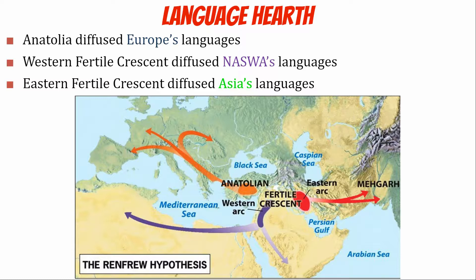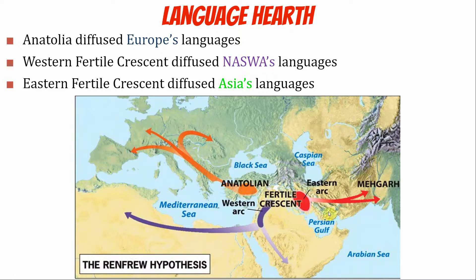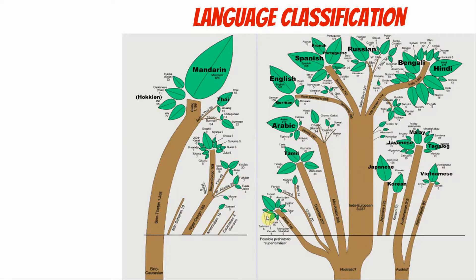So where did language start? Most linguists believe the Fertile Crescent — the area around Anatolia, which is modern-day Turkey — is the hearth of languages. Most Asian languages came out of the eastern side, most European languages from the northern side, and many African languages from just south of the Tigris and Euphrates rivers. That's the hearth of languages in the Middle East, Southwest Asia.